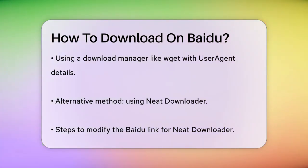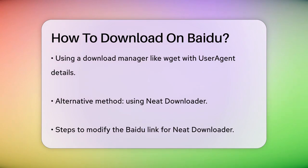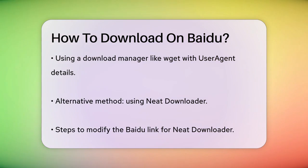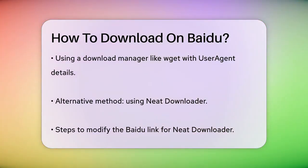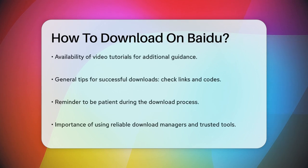Another method involves using Neat Downloader. Open the Baidu link in your browser, change the link slightly without altering the Chinese text part, then use Neat Downloader to download the file. You can find video tutorials online to guide you through this process if you need more visual help.